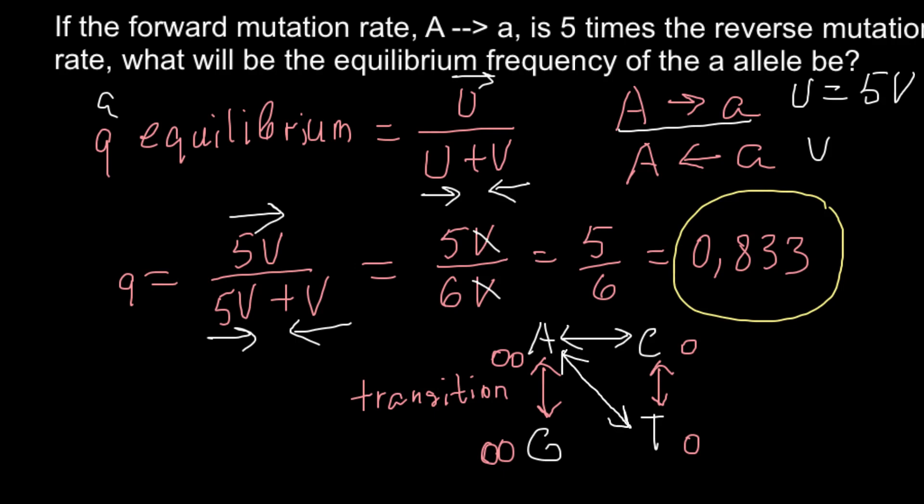So, also purine with pyrimidine and vice versa. And we also might have such substitution and such. So, as you see, there are twice as many transversion reactions and substitutions than transition. So, this is going to be transversion substitution.